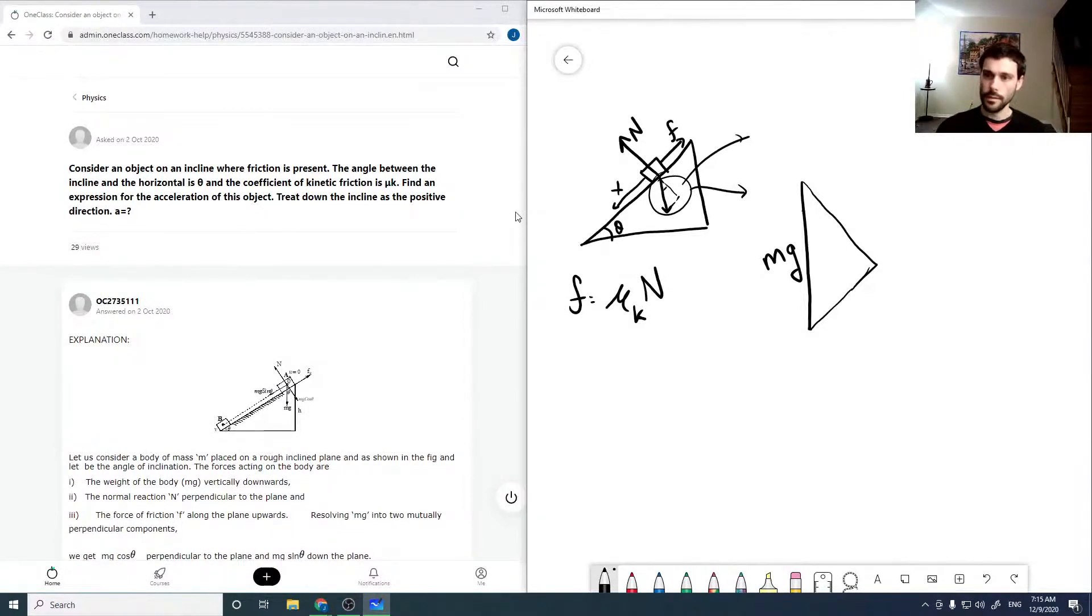Then this is going to be our theta, which makes this mg cos theta and this mg sine theta. You can kind of see it because if you flip it up and move it over, it's going to be an identical triangle to the one up here.